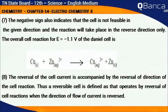The negative sign also indicates that the cell is not feasible in the given direction and the reaction will take place in the reverse direction only. The overall cell reaction for E = −1.1 V of the Daniel cell is: Cu + Zn²⁺ → Cu²⁺ + Zn. Thus, a reversible cell is defined as one that operates by reversal of cell reactions when the direction of flow of current is reversed.